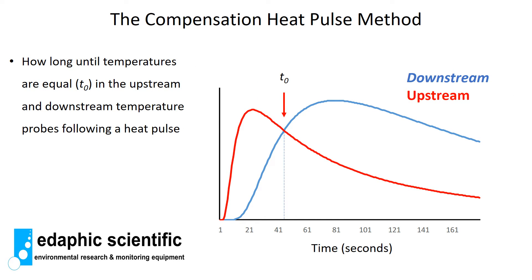With the compensation heat pulse method, we are interested in knowing when the two temperature curves intersect — that is, when the temperatures become equal. Looking at the conduction and convection graph, the red curve is the upstream temperature probe and the blue curve is the downstream temperature probe. The upstream probe shows a rapid rise to a maximum followed by a decay, while the downstream probe has a slower rise and slower decay. The intersection point is given the term t0.